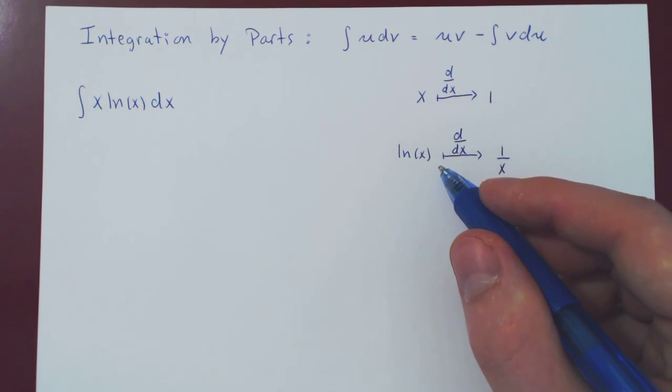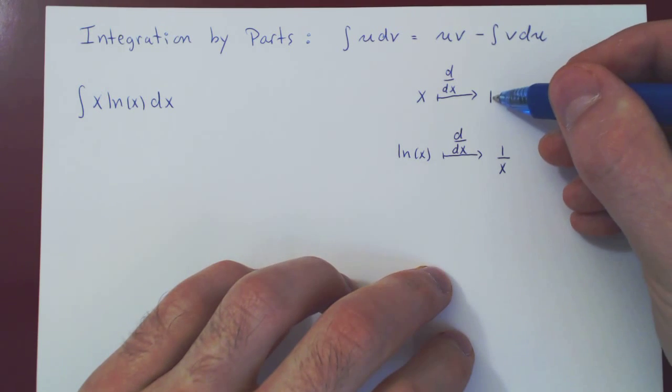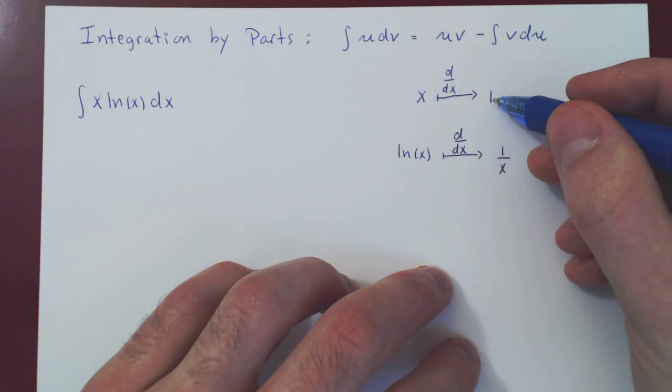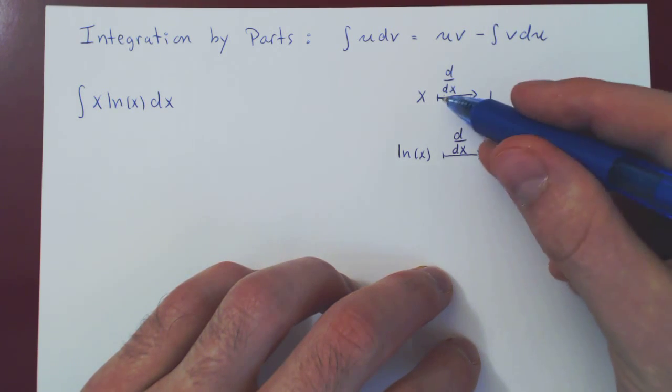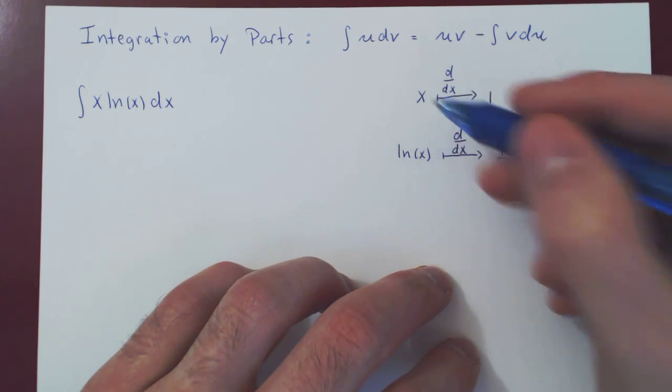Now be careful that when I say that u is the function whose derivative gives the greatest simplification, I do not mean the simplest derivative. Clearly, 1 is simpler than 1 over x. So you might think, well, okay, the derivative of x is simpler than the derivative of ln of x, so we'll take u to be x.